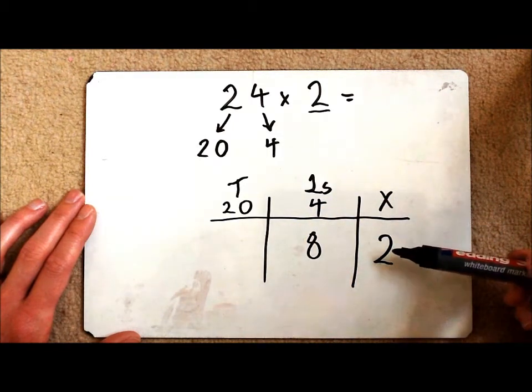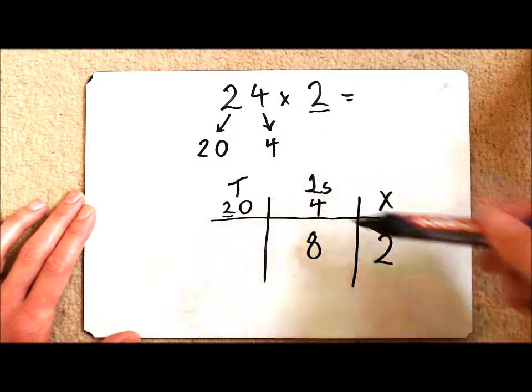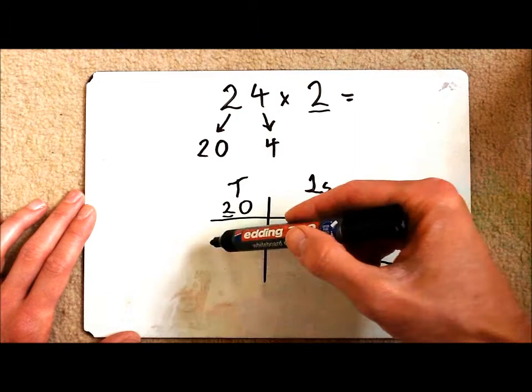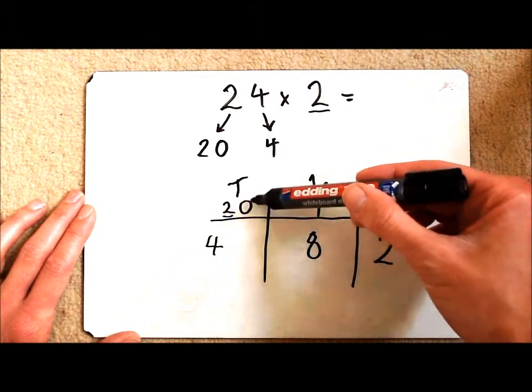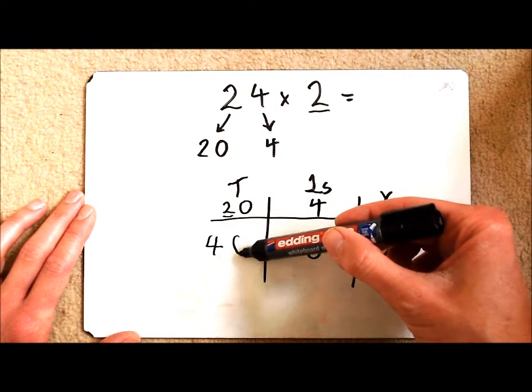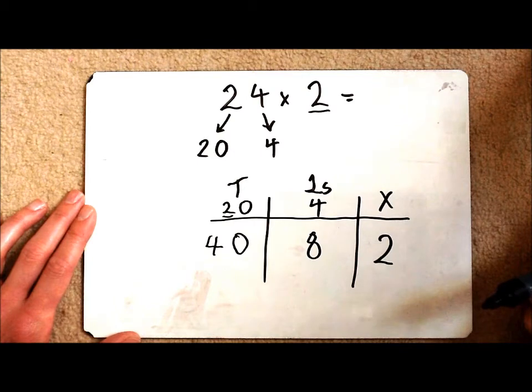Then I've got to multiply my tens. So here I've got a 2. So I've got 2 times 2 which is 4. But it's actually 2 times 20. So I'm going to have to make it 10 times bigger by putting a 0 back on. So 2 times 20 is 40.